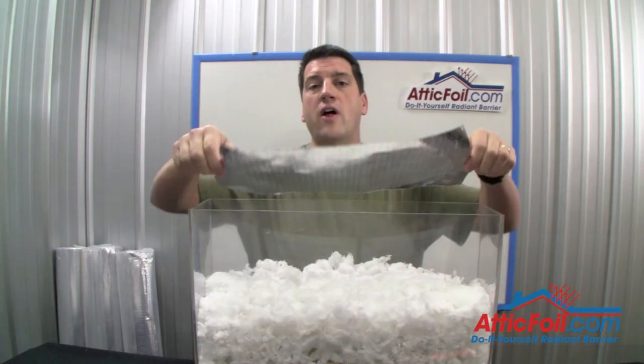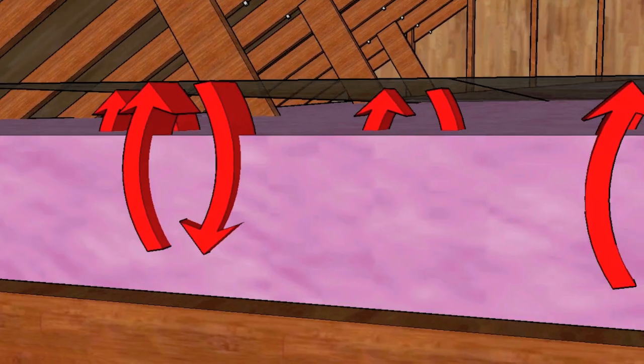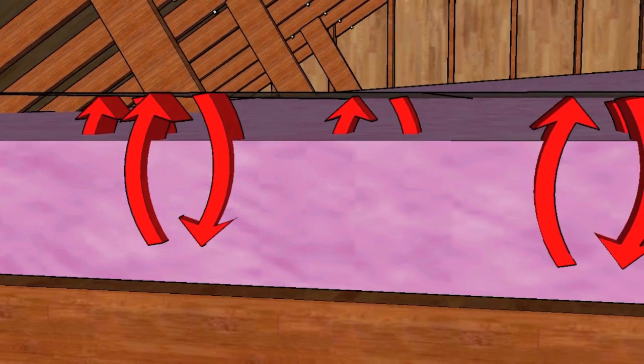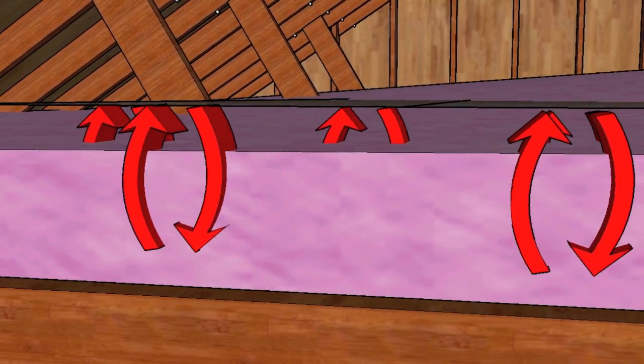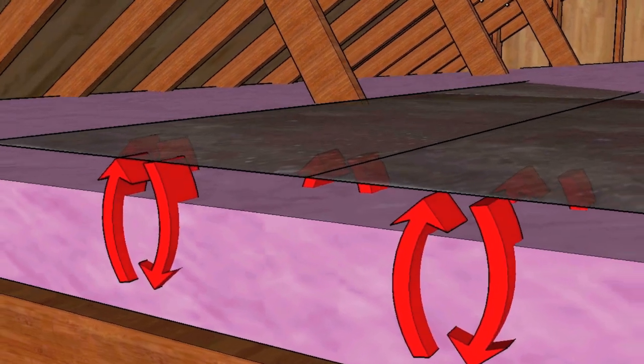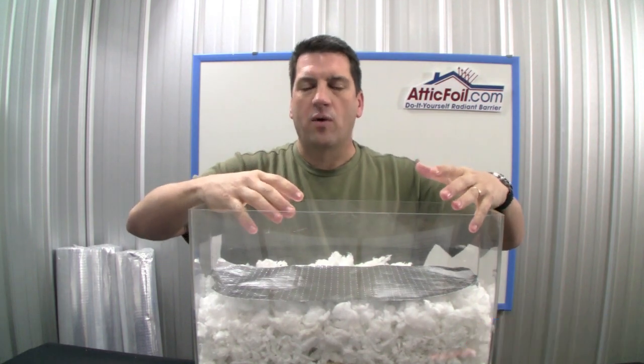When you install attic foil radiant barrier directly over your attic insulation, it's going to work off two qualities, reflectivity and emissivity. Reflectivity is the ability to literally bounce radiant heat back towards where it came from. This is just like a mirror. Emissivity is the ability not to transfer heat, stored energy, into its radiant heat form.